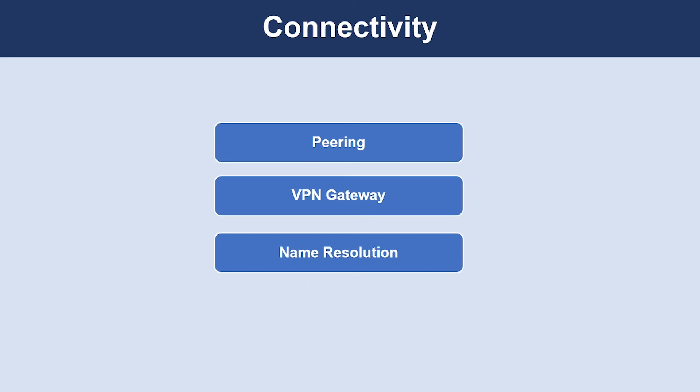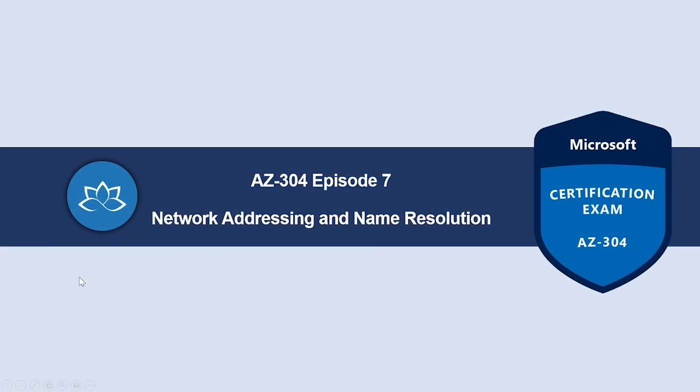Resources in one virtual network cannot resolve the names of resources in a peered virtual network using Azure's built-in DNS. To resolve names in a peered virtual network, deploy your own DNS server or use Azure DNS private domains. Resolving names between resources in a virtual network and an on-premises network also requires you to deploy your own DNS server.